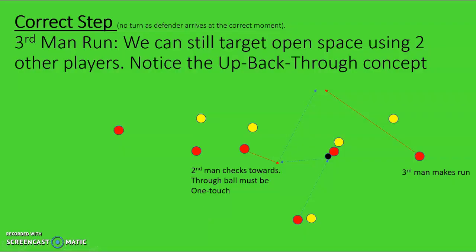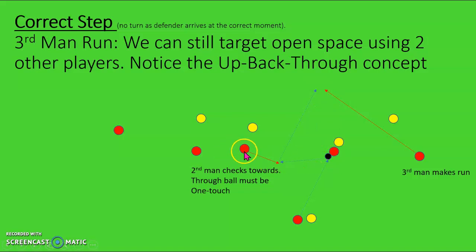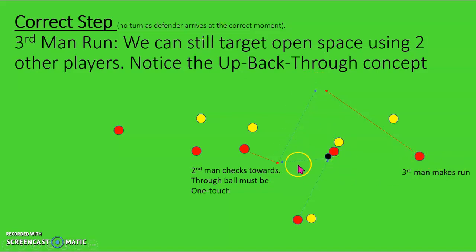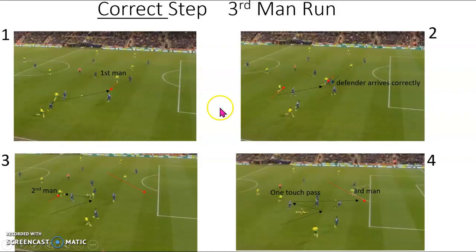What if they don't jump early, and they move as the pass moves, arrive right when the pass gets there, and deny our turn? There's still going to be space open behind the defender briefly before the back line shifts. Here's a sophisticated way: a third man run. We need two other players. Since this guy can't turn and play into the space, he drops the ball off for one guy to make the pass, and another guy makes the run. One of the guys has to check towards, and one has to make the run — and the pass has to be one touch.